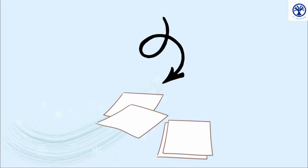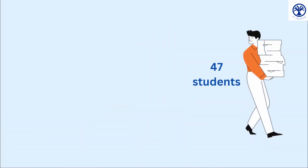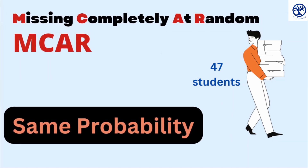DA has 47 tests out of 50, which means that there is missing data, and this missing data is known as missing completely at random — MCAR in the missing data type terminology.